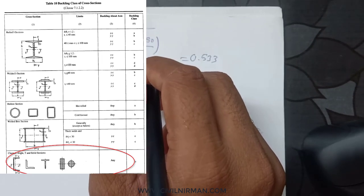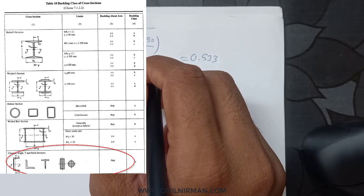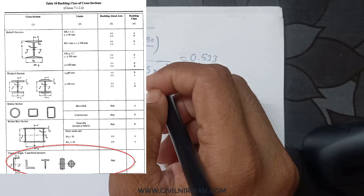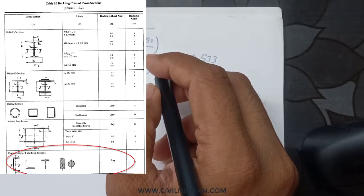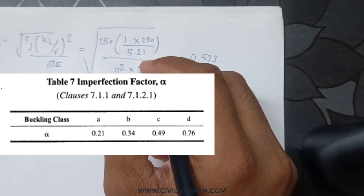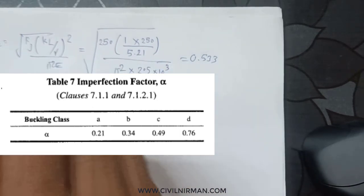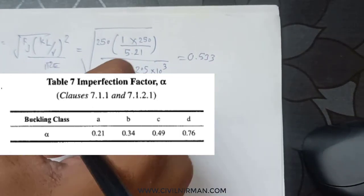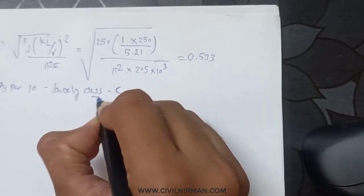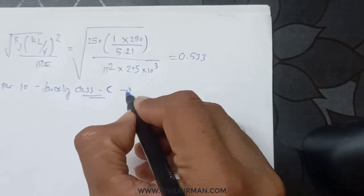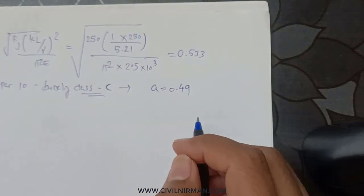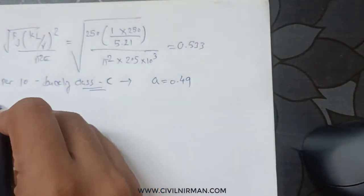The next step is to work out the buckling class using Table 10. Our section is an angle section, which falls under Class C. As per Table 7 for Class C, the imperfection factor α = 0.49. So from Table 10, the buckling class is C because we have considered an angle section, and the corresponding α value from the buckling class classification is 0.49.